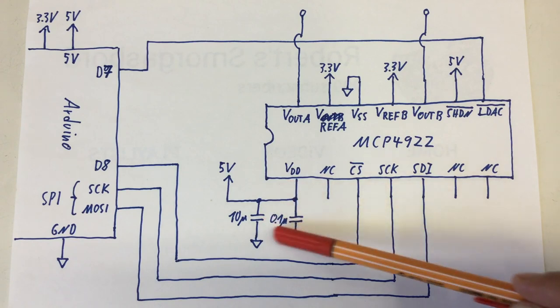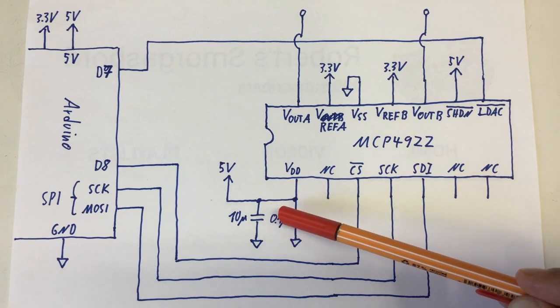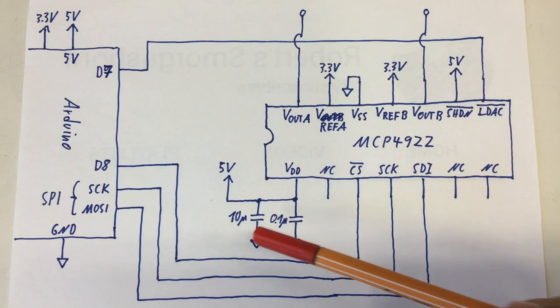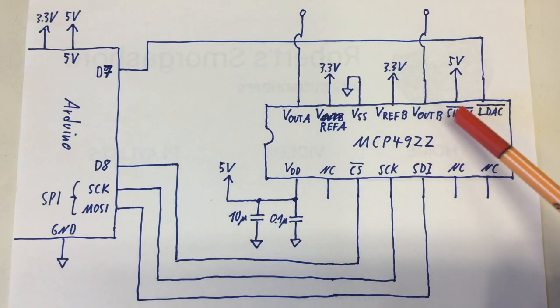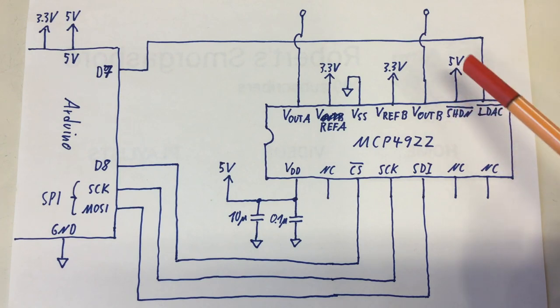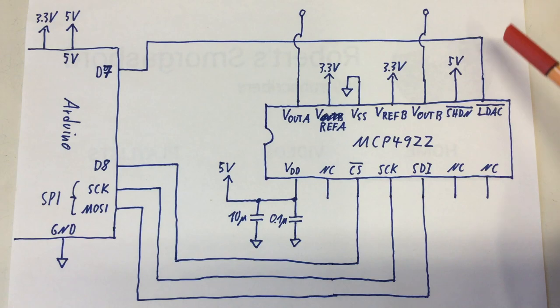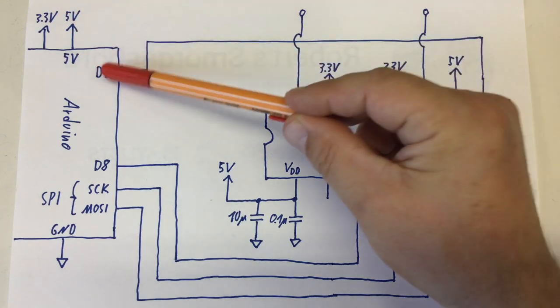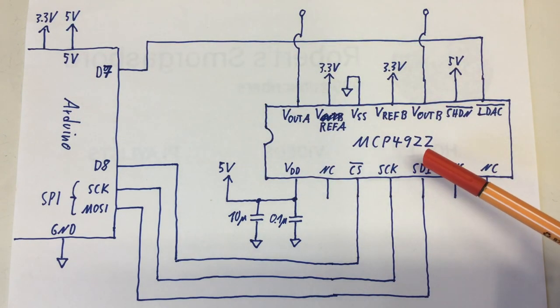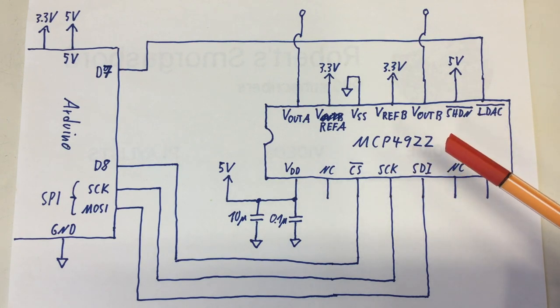5V of the Arduino supply voltage VDD goes to our chip here. And again, the decoupling capacitors 0.1 microfarad and 10 microfarad, both ceramic. The shutdown pin will be also pulled high to 5V from the Arduino. So it's not shut down. And the load DAC pin will be connected this time to the D7 pin of the Arduino.